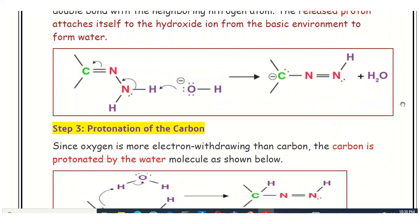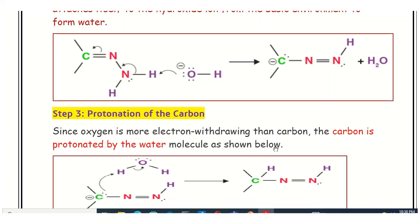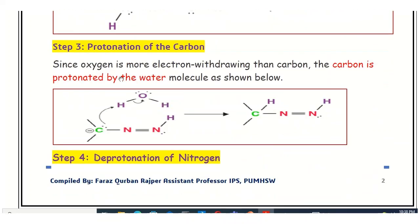Step three is the protonation of carbon. In this step, the carbon-nitrogen double bond is broken. The electron shifts, giving the carbon a negative charge — forming a carbanion. The carbon with a negative charge is unstable; oxygen is more electron-withdrawing than carbon, so the carbon is protonated by the water molecule.